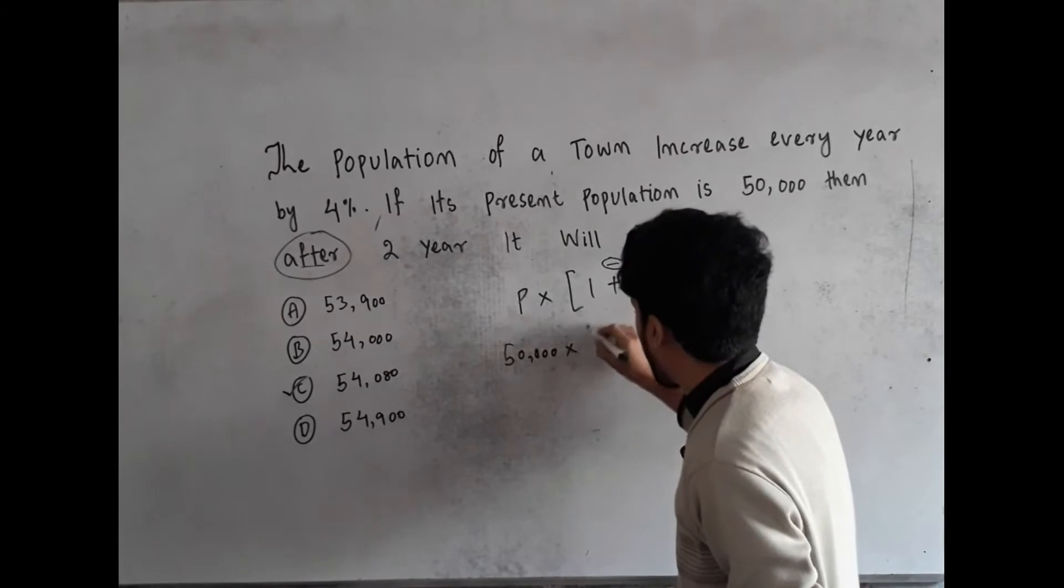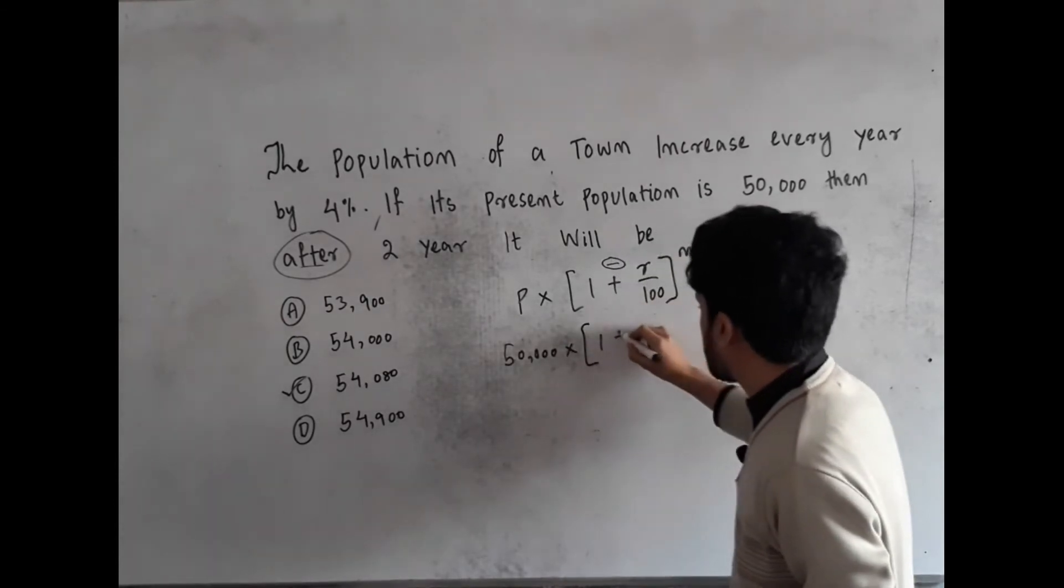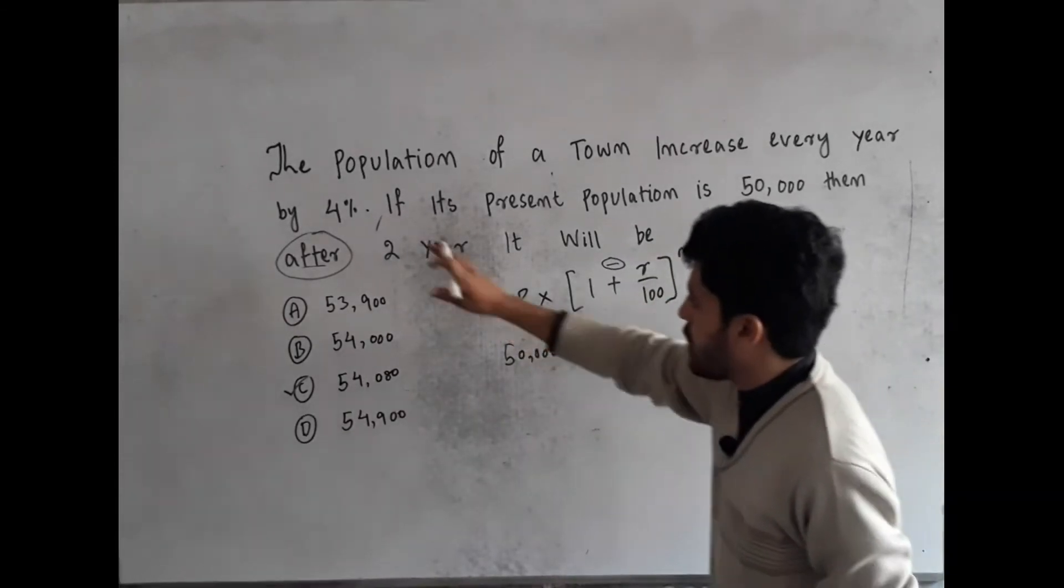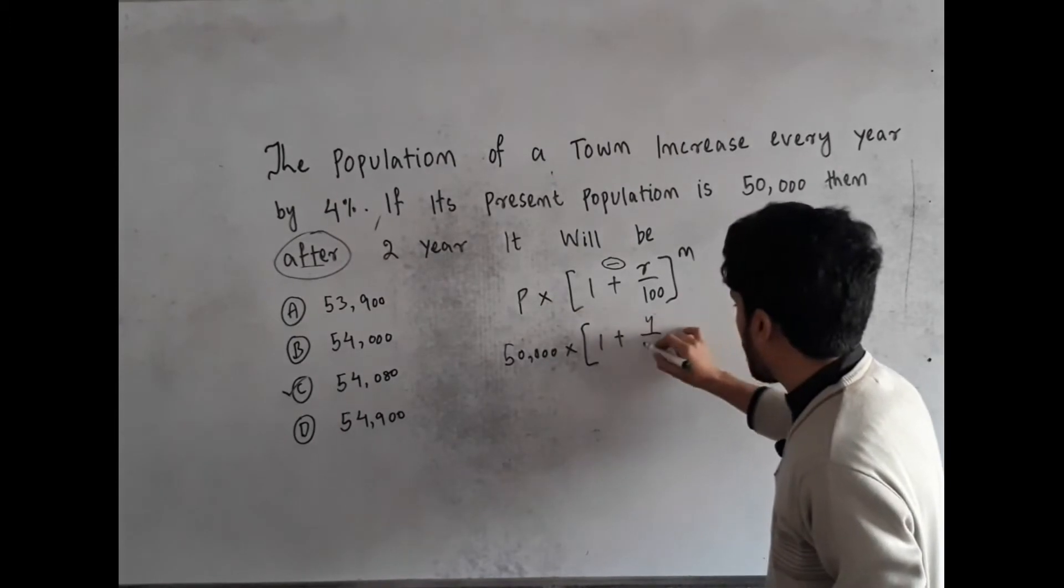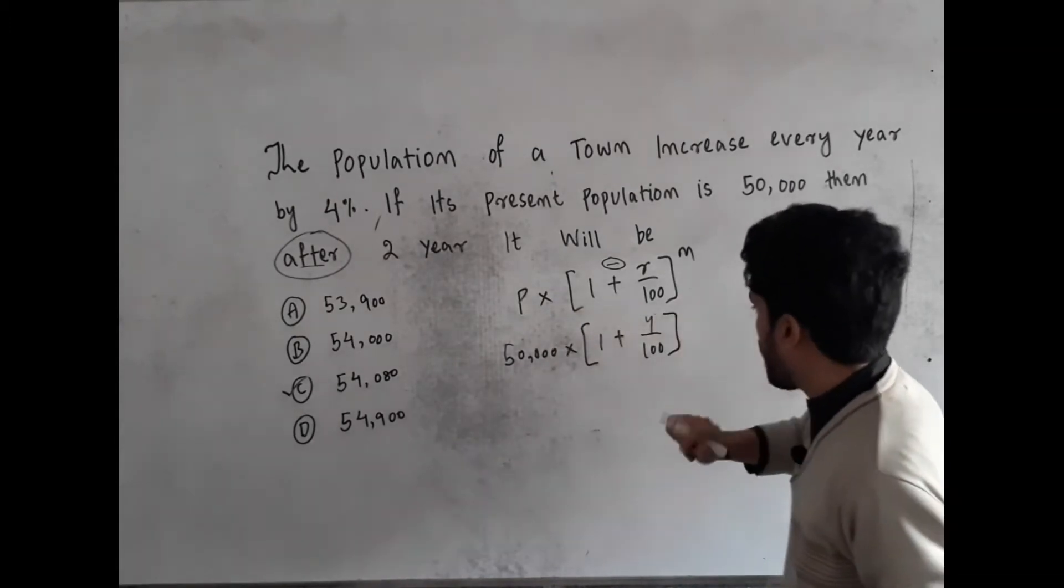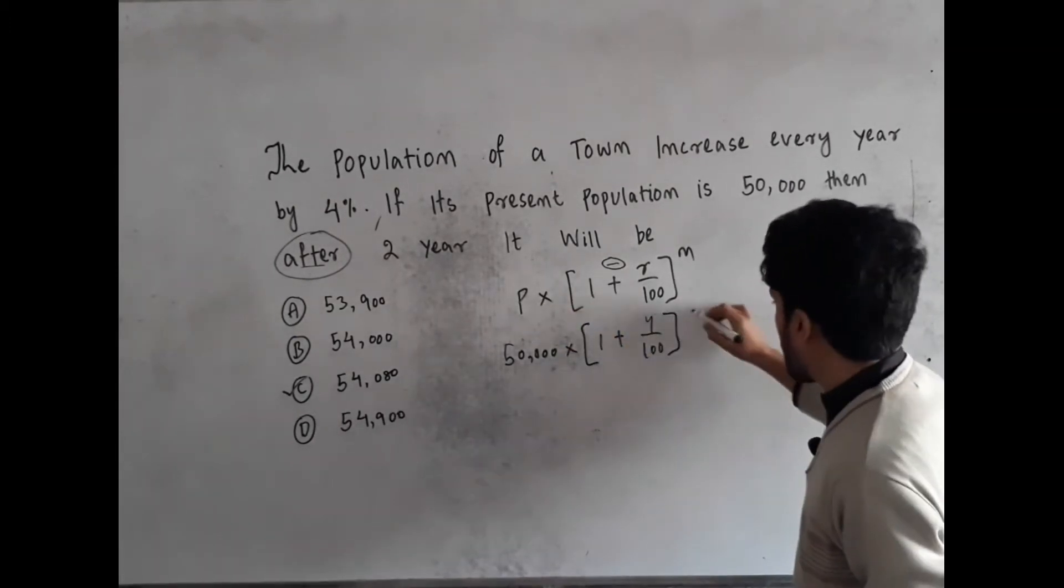50,000 multiply by 1 plus R divided by 100. It means 4 divided by 100. Break it. And N is in this case 2 years.